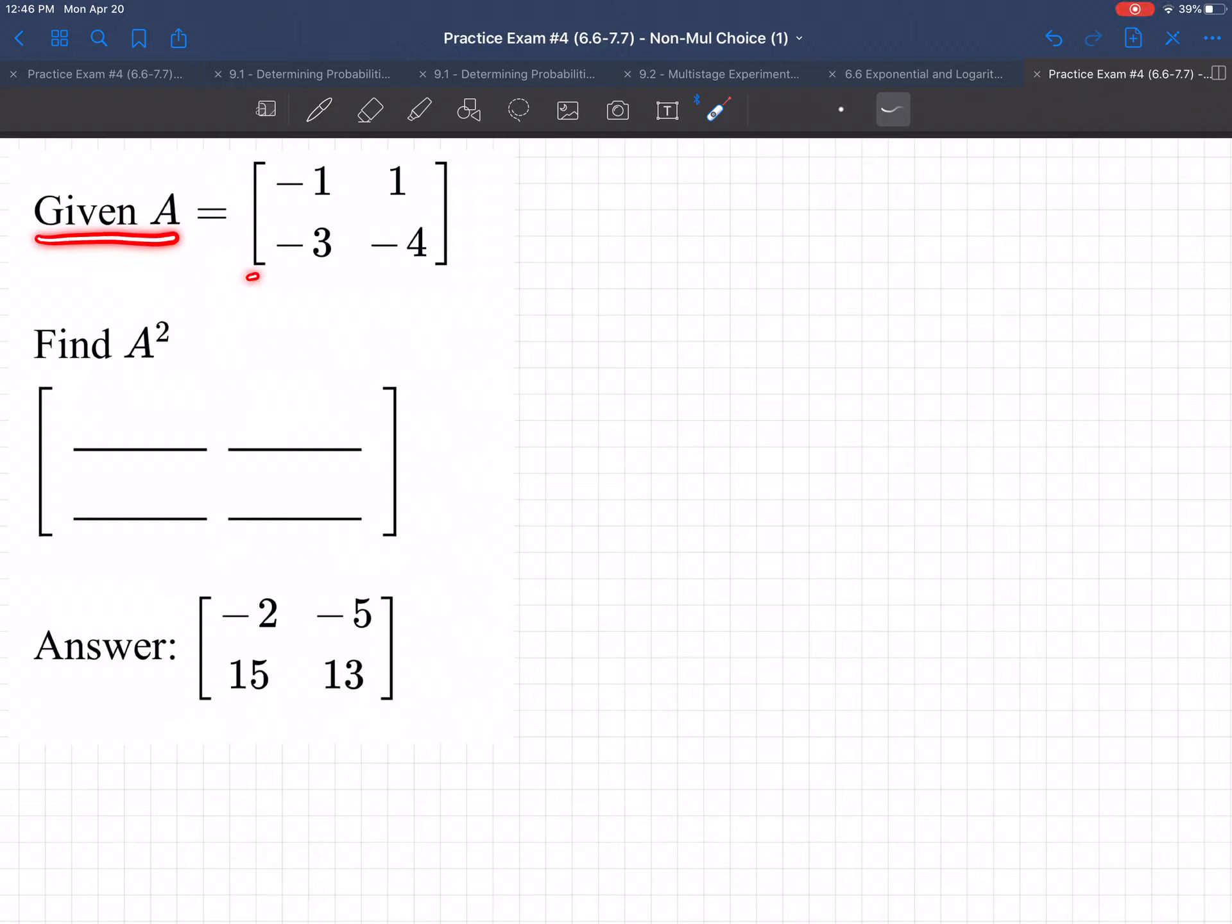Okay, given matrix A is this 2 by 2 matrix, find A squared. So they want me to square a matrix. So what this means, A squared means matrix A multiplied by matrix A. Yeah, we can't, by the way, we can't just square all these numbers and call it good. That's actually wrong.